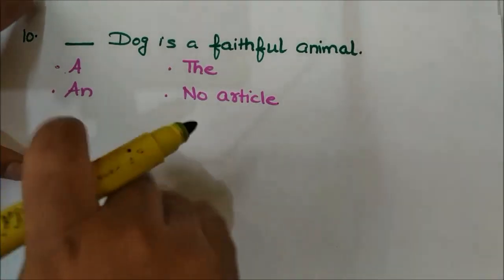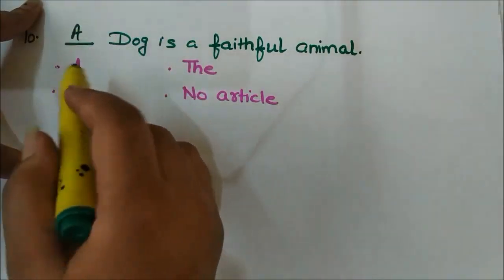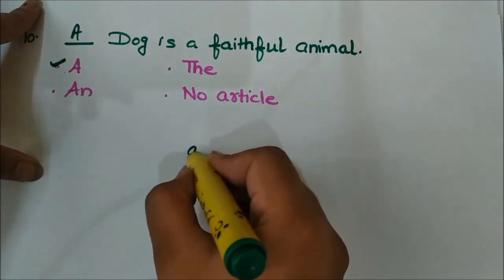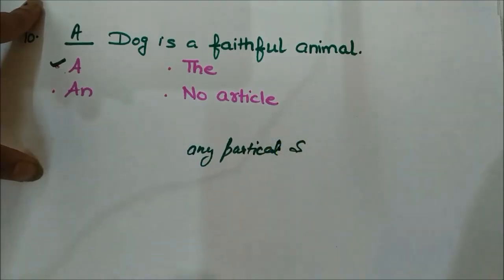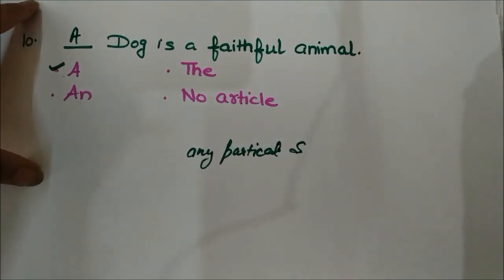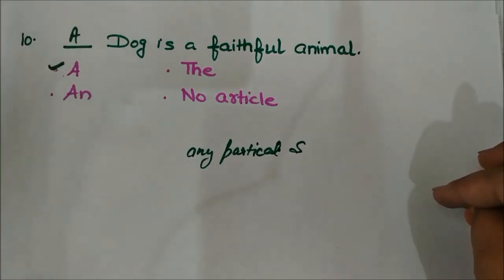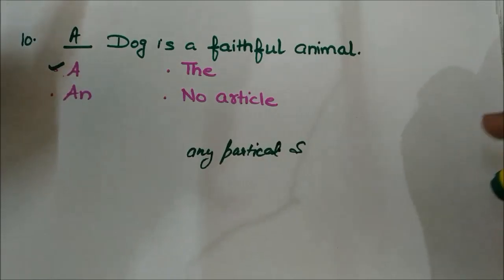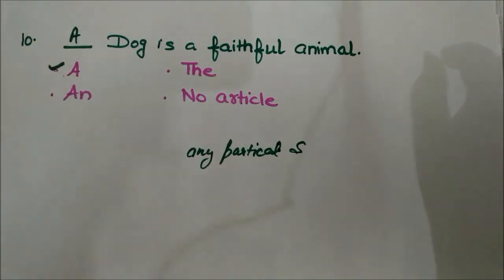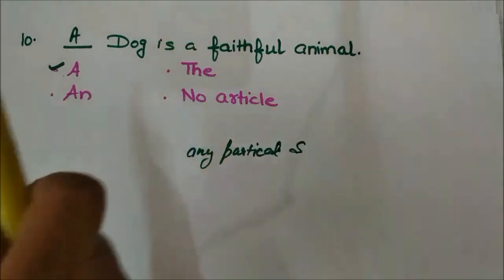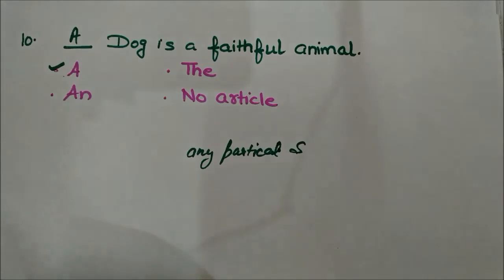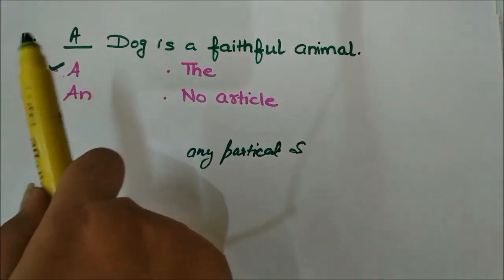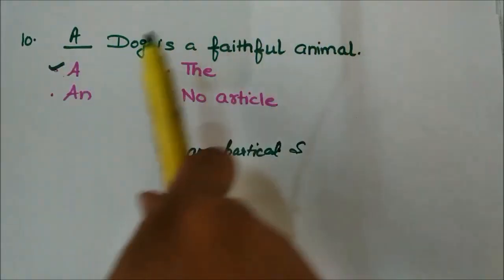Next question: '___ dog is a faithful animal.' Here I will put 'a' — 'A dog is a faithful animal.' When we talk about any particular species as a whole community, we use 'a'. 'A dog is a faithful animal' means every dog, every breed — there is no differentiation. When you are locating or pointing out a particular community or species, you can use 'a'. Here 'dog' represents the whole dog species.